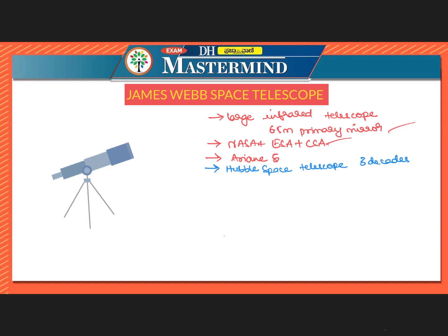James Webb Space Telescope was formerly known as Next Generation Space Telescope (NGST) and was renamed in September 2002 after former NASA administrator James Webb.